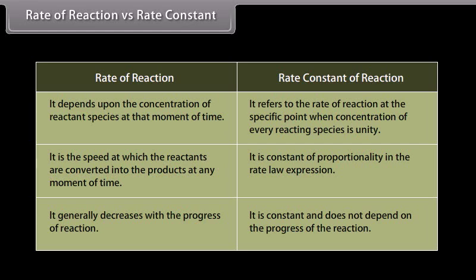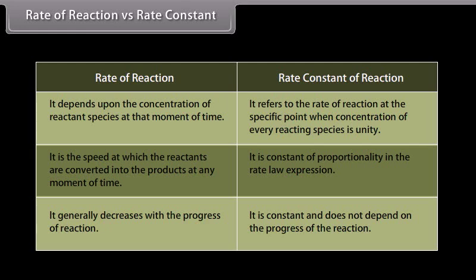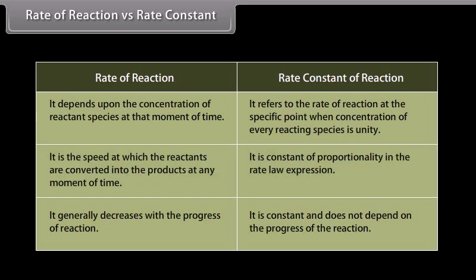The important differences between rate of reaction and rate constant: rate of reaction depends upon the concentration of reactant species at that moment, while rate constant refers to the rate when concentration of every reacting species is unity. Rate of reaction is the speed at which reactants are converted into products at any moment, while rate constant is the constant of proportionality in the rate law expression. Rate of reaction generally decreases with the progress of reaction, whereas rate constant is constant and does not depend on the progress of the reaction.